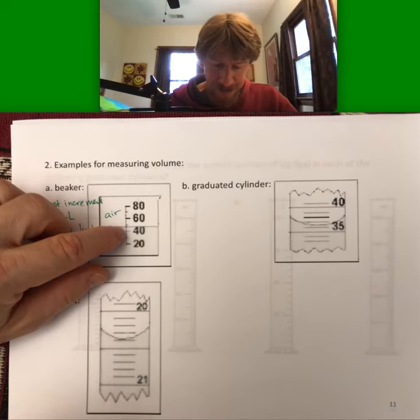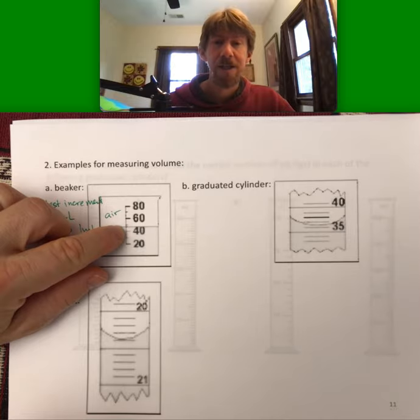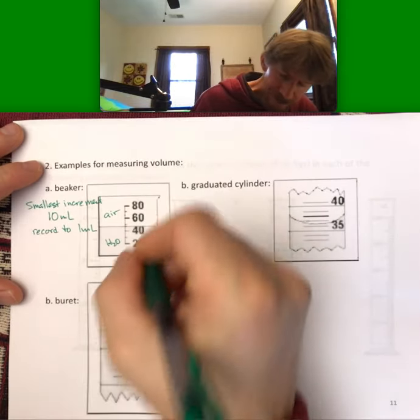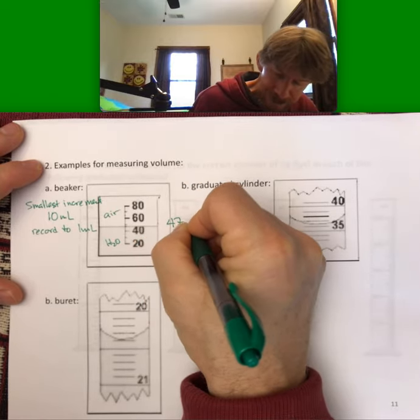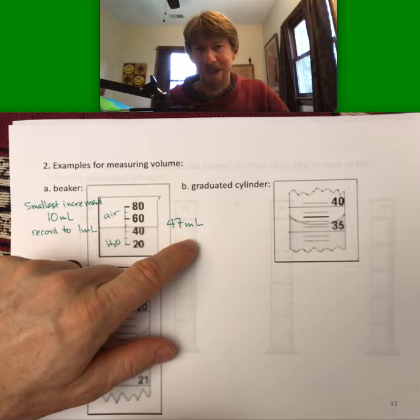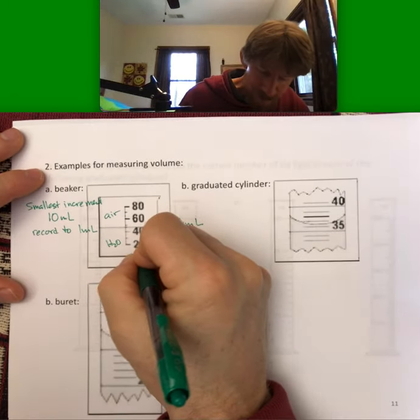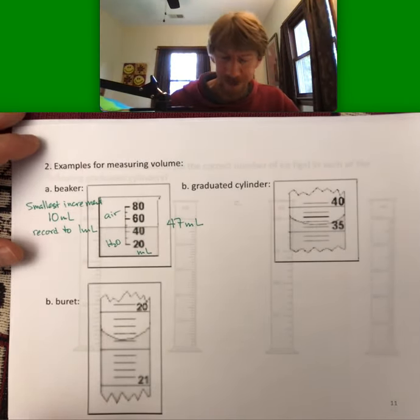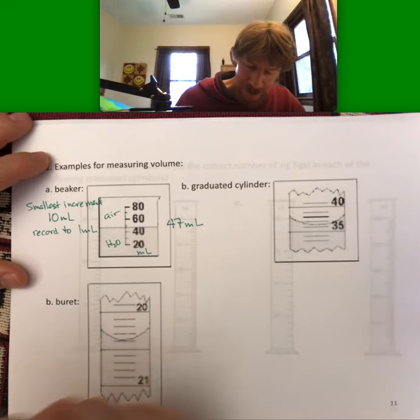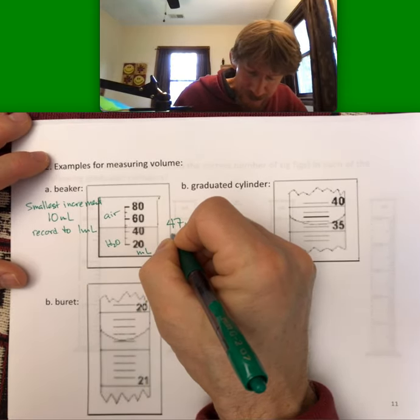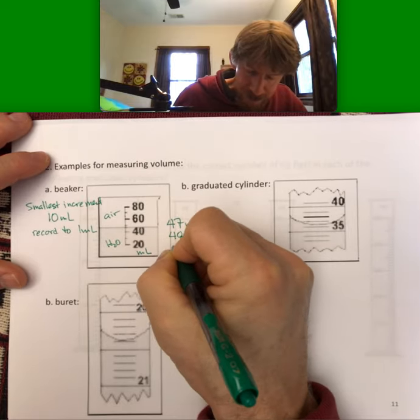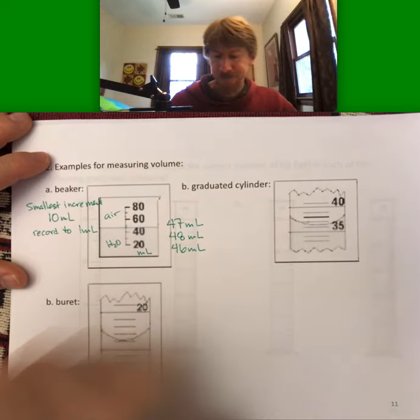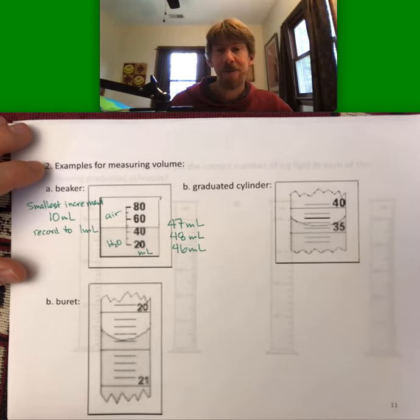And I'm looking at this, and it looks like it's more than 45, but less than 50. So I might say 47. And you don't know what the units are, but these are milliliters. It should say milliliters right on the beaker, but I cut that part out when I made it. I could see 47. I could see 48. I could see 46 milliliters here. Those are the acceptable options.